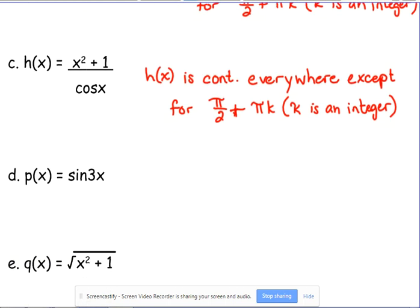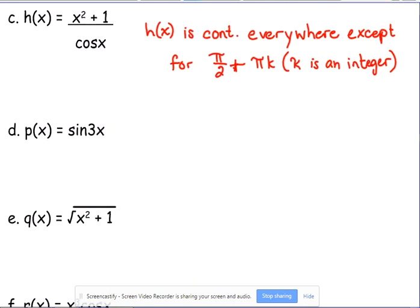Example D: It's a composite function. p(x) is equal to the sine of 3x. We are plugging 3x into the sine function. 3x is continuous. Sine of x is continuous. So p(x) is everywhere continuous.